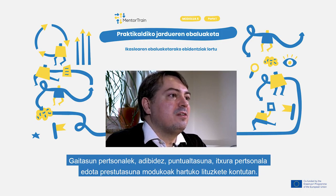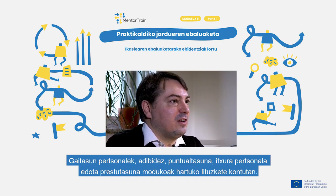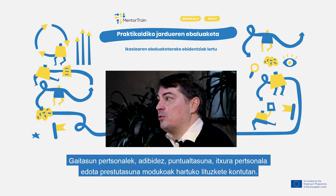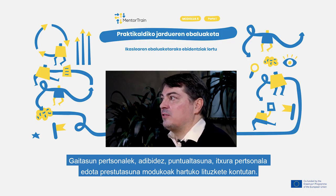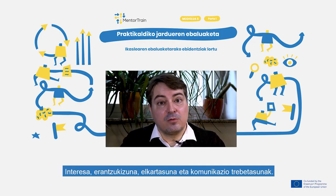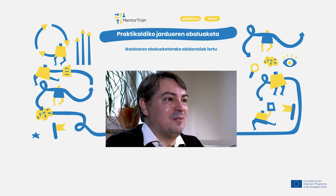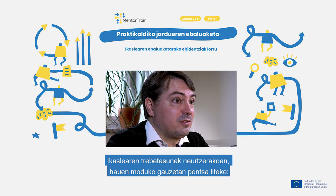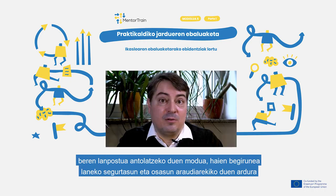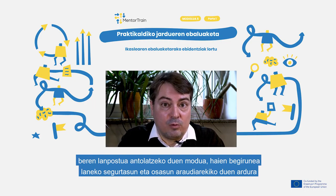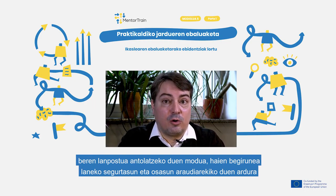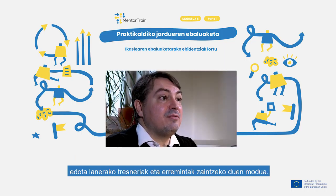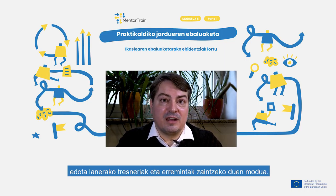Personal competencies would for example include things like punctuality, personal appearance, availability, interest, responsibility, sociability and communication skills. When you consider an apprentice's personal abilities and skills, you could think of things like the way they organize their workplace, their regard for occupational safety and health regulations, and if they have a good command of work equipment and tools.